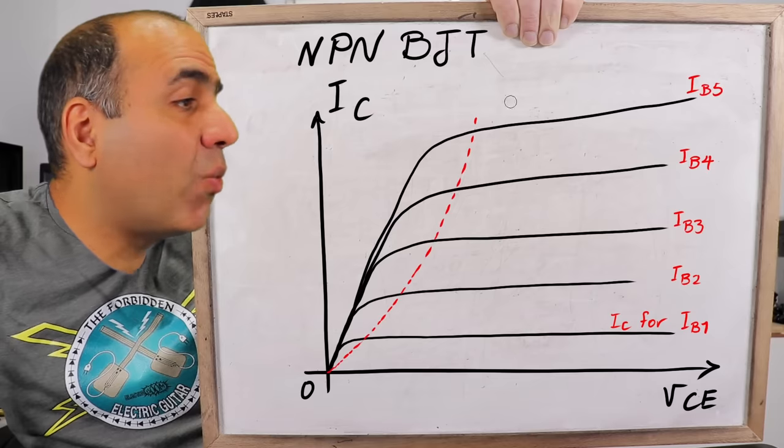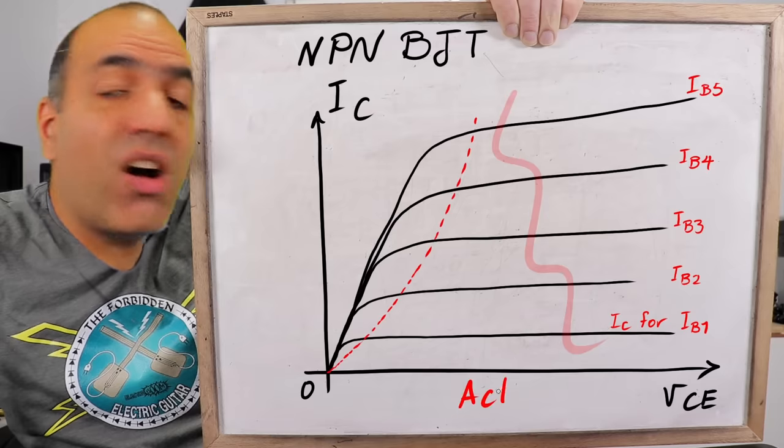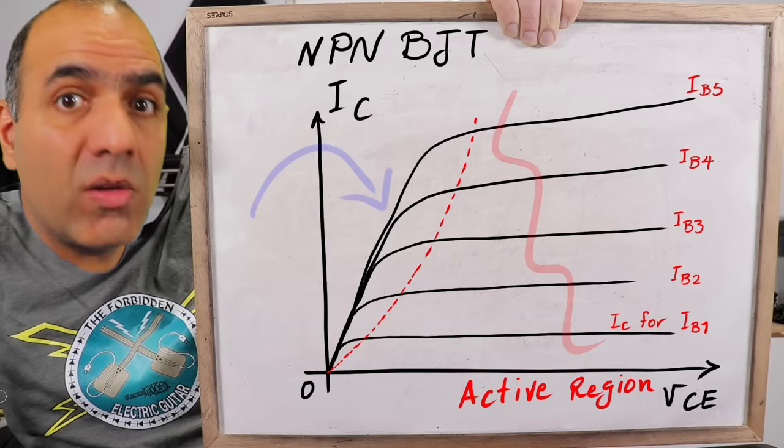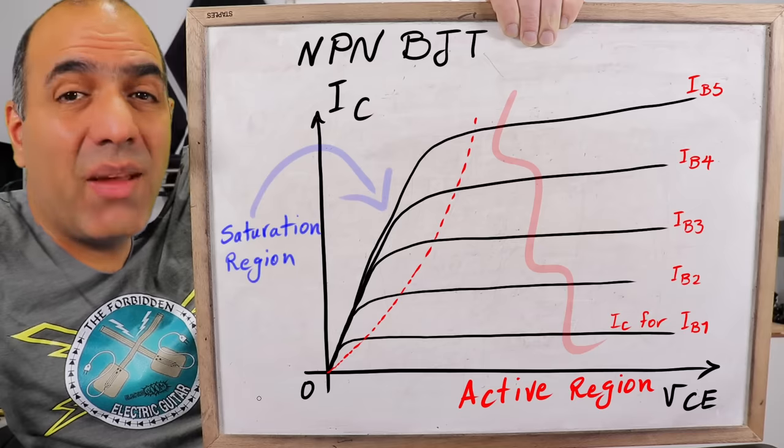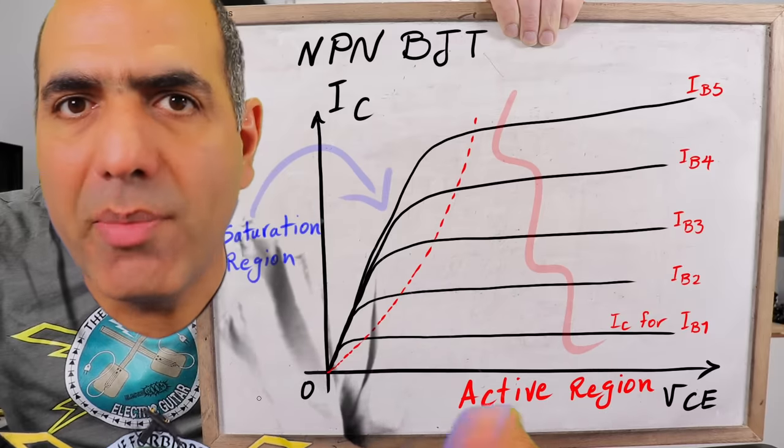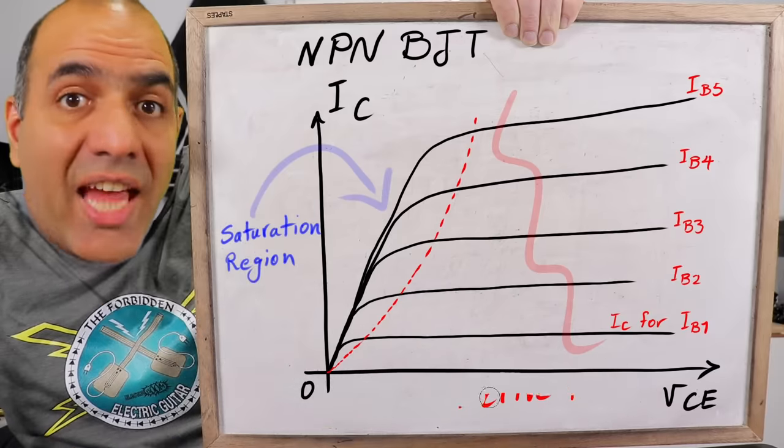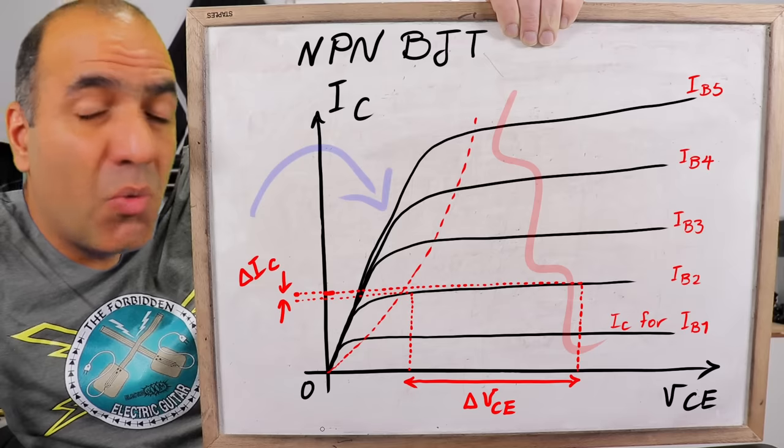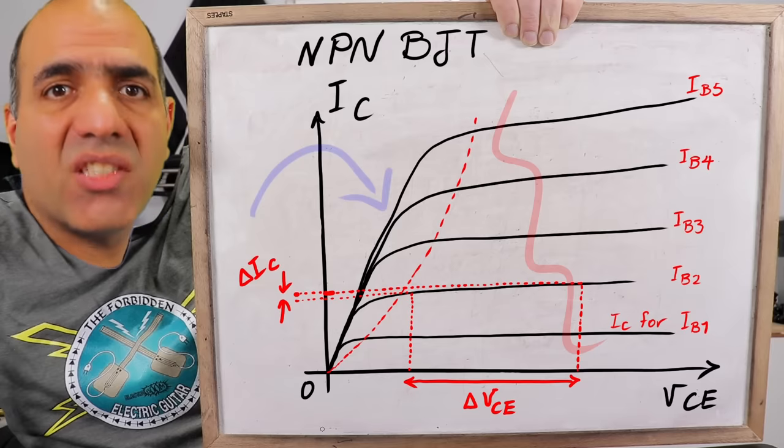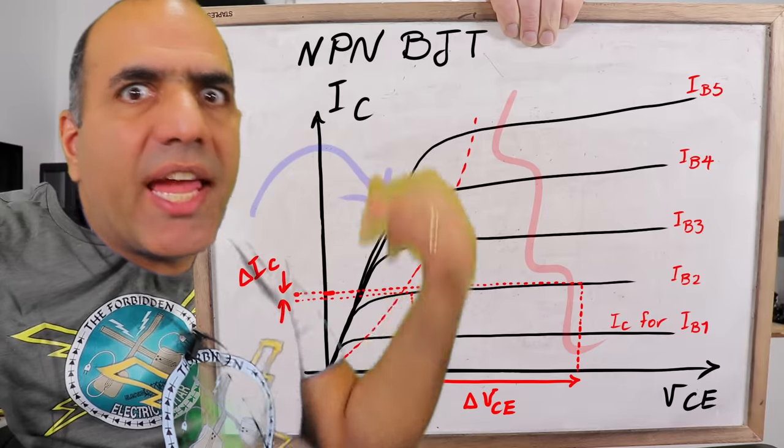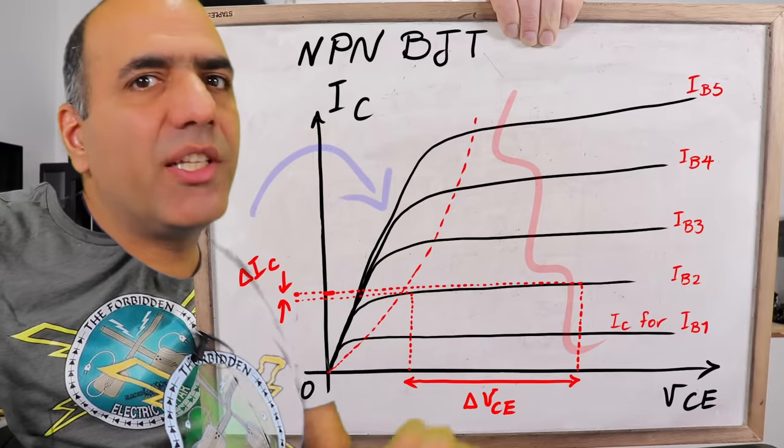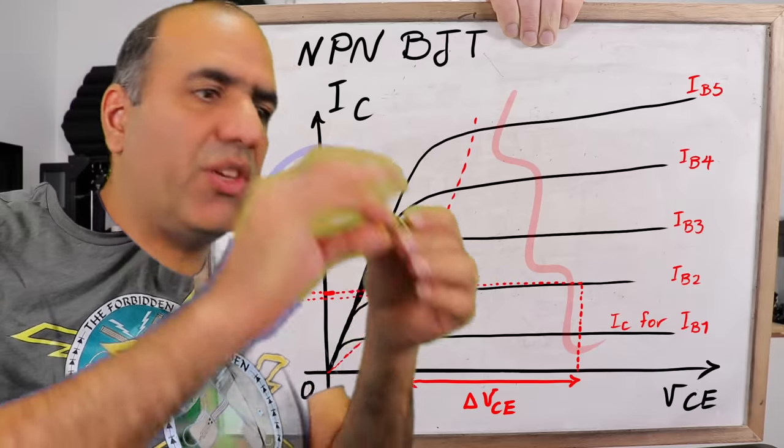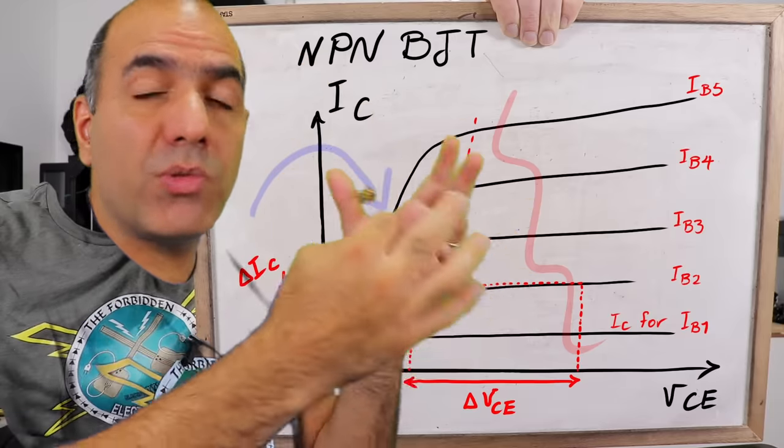A graph changing based on the base current. The region after this dotted line, where the collector current is almost constant, is called the active region. And the region where the collector current starts dropping, because VCE becomes too small, is called saturation region. The regions are named as such after... Nobody cares! I don't remember why, and this is not a history lesson, we just want to use it. In active region, the collector current changes so little based on the CE voltage that, for simplicity, mostly we assume that the collector current is just constant. In electrical engineering, you'll notice that, to keep sane, we simplify by ignoring small little things, and designed to get close to what we need, which is mostly good enough. And if it is not, we use adjustable components to fine-tune to almost exactly what we need.